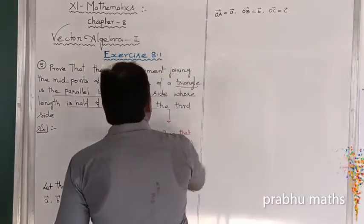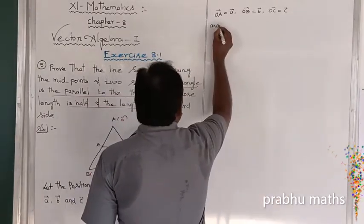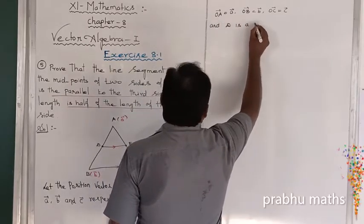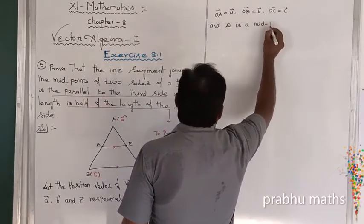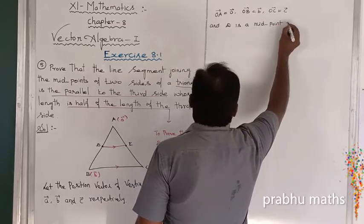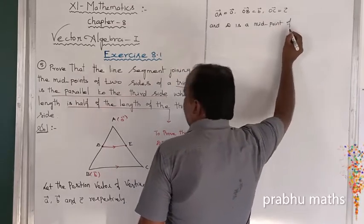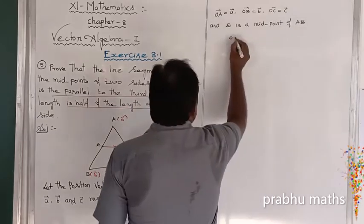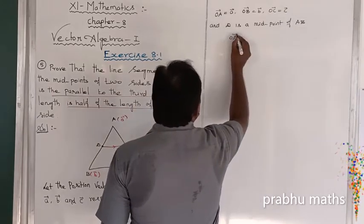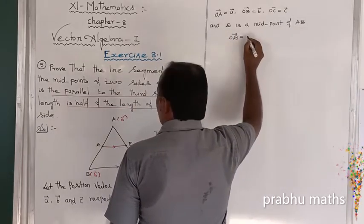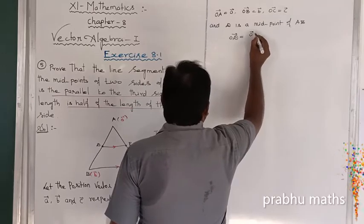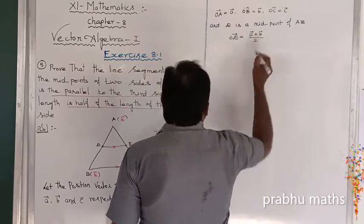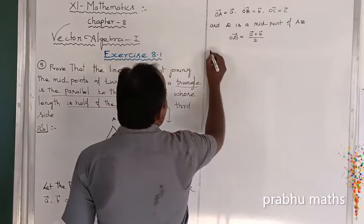Since D is the midpoint of AB, we use the midpoint formula: OD vector equals A vector plus B vector divided by 2.